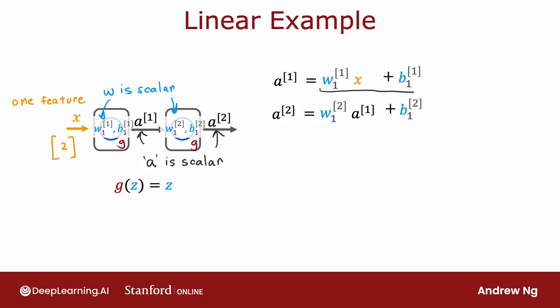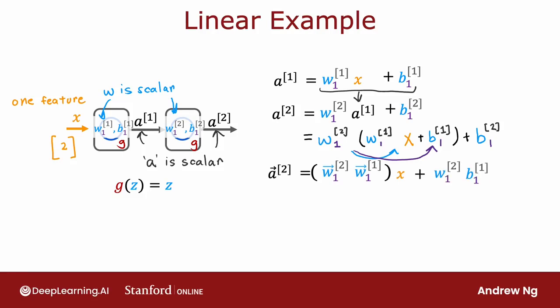And let me take this expression for a1 and substitute it in there. So that becomes w2 times w1 x plus b1 plus b2. And if we simplify, this becomes w2 w1 times x plus w2 b1 plus b2.